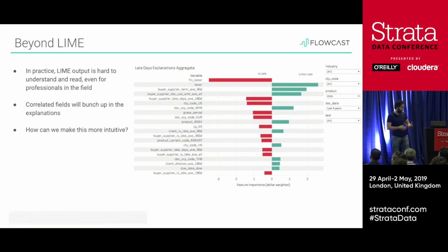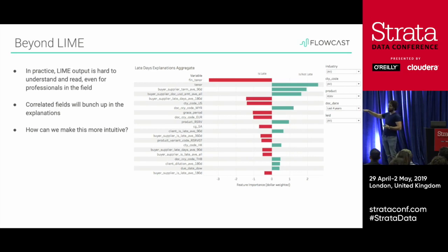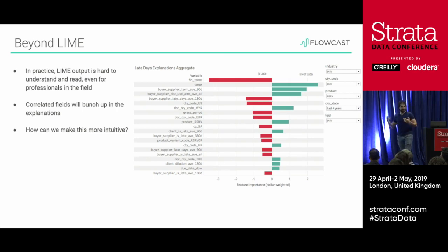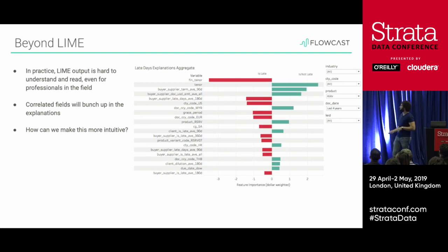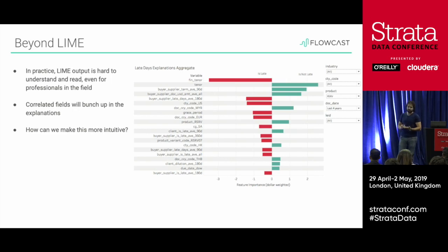Flowcast actually implemented LIME and built a bar graph that shows whether a feature is going to explain a prediction towards one direction of the binary classification or the other. In actual practice, when we deliver this to our customers — we're providing machine learning models to banking clients predicting credit risk, fraud risk, and things like that. This is in the financial space, so you're going to see features of a financial nature. But when you show this to people who aren't in data science, they're going to scratch their heads. Even for me, it takes maybe 15 minutes to get in the right mindset of how to read this.